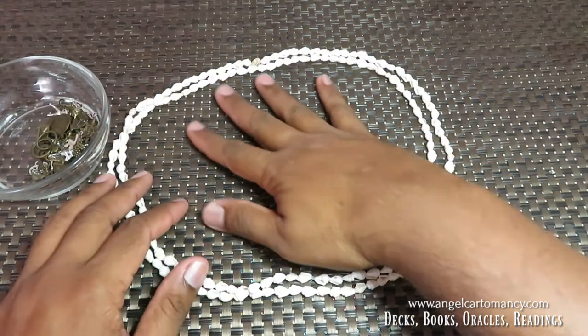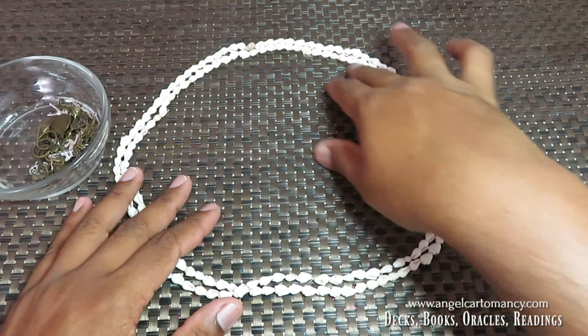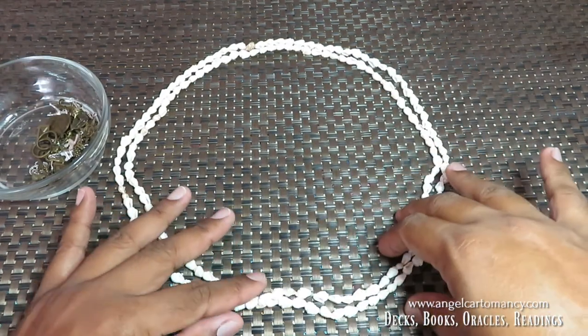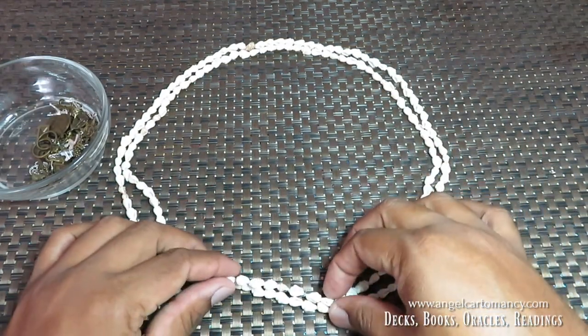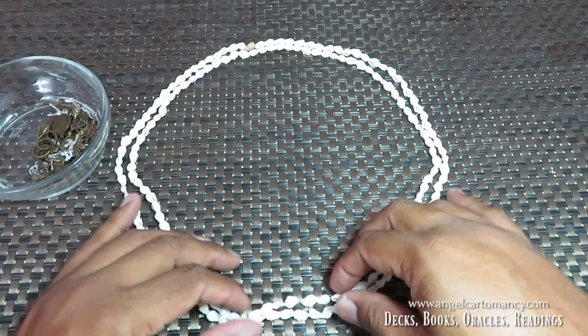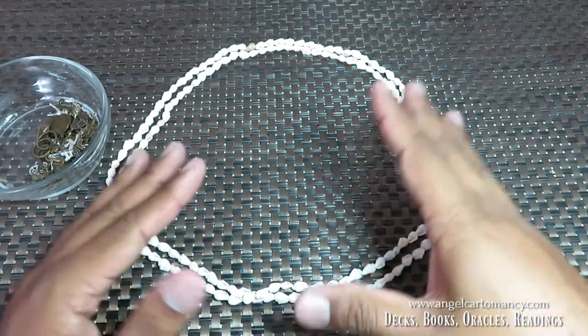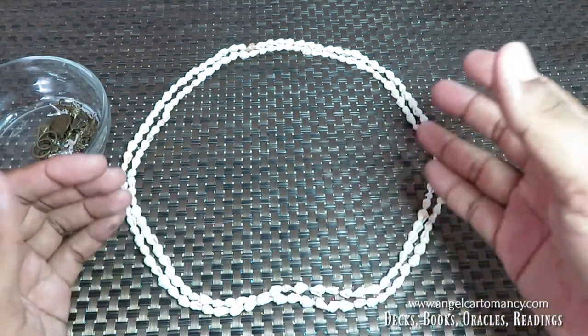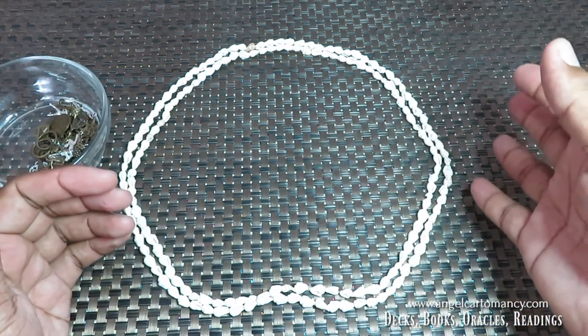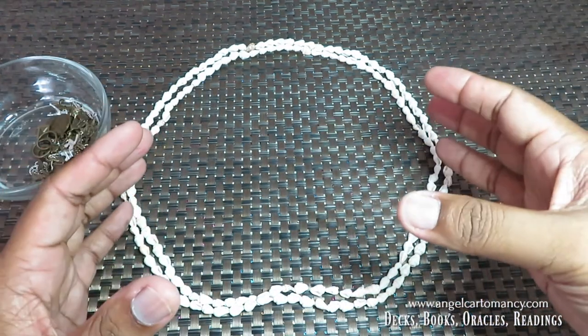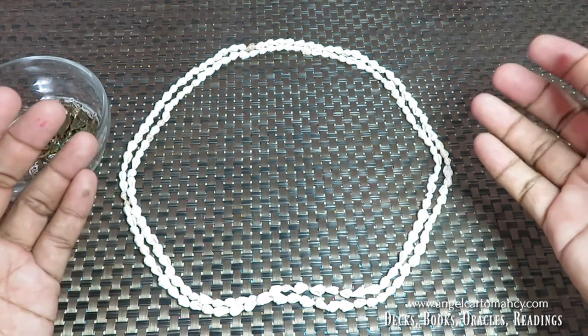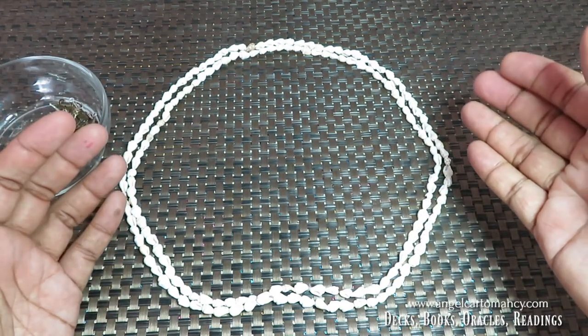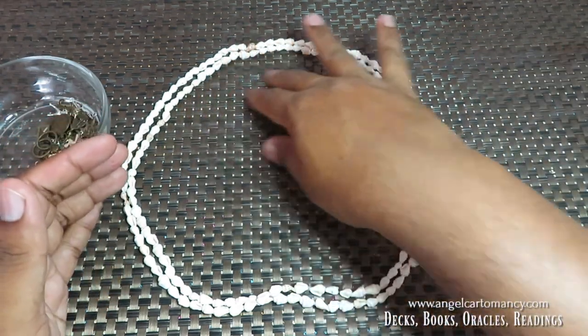So you can also use something that will define a perimeter. Let's say here I have this beautiful shell necklace. I can use that or you can use pearl or whatever. You can use like a picture frame is good as well. Anything that will act like a defined area.